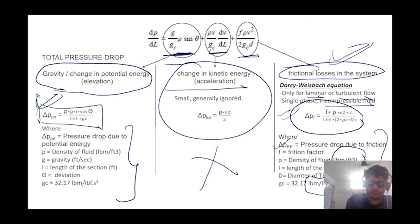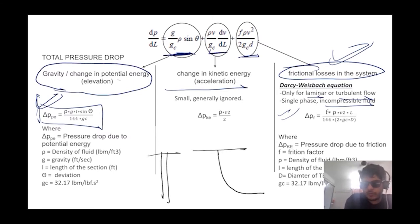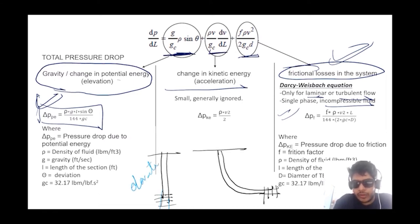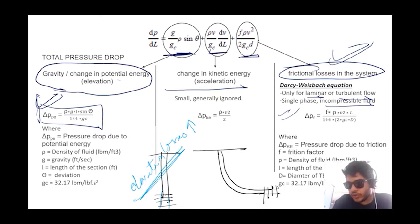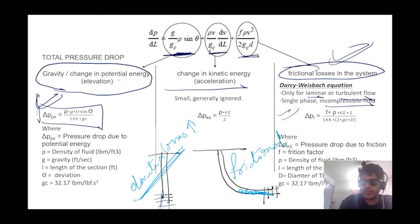For a vertical well, elevation losses are very high — almost 80% of losses occur because of elevation — and frictional losses are comparatively low. On the other hand, for a horizontal well, frictional losses dominate as compared to a vertical well. The frictional loss is very high in horizontal wells.